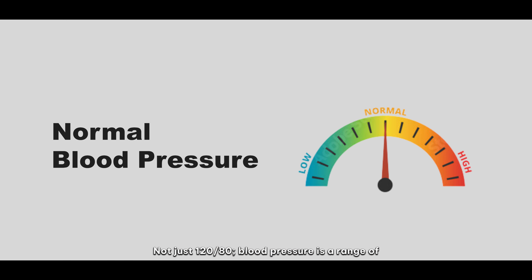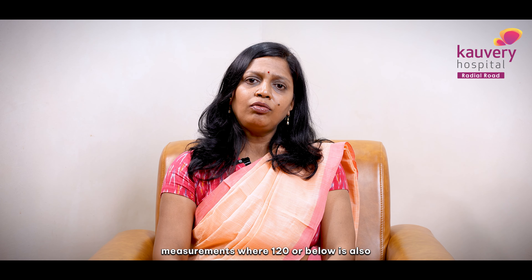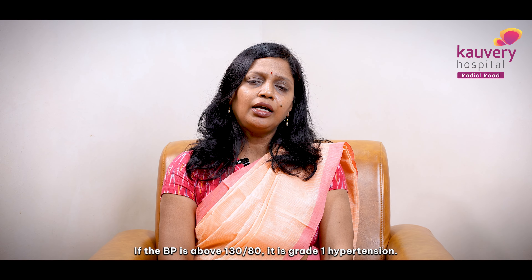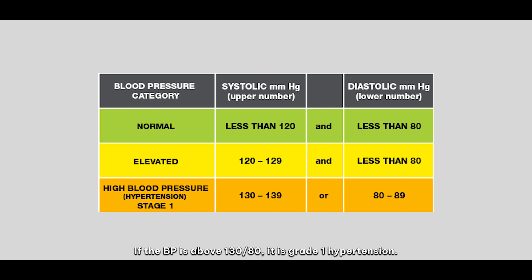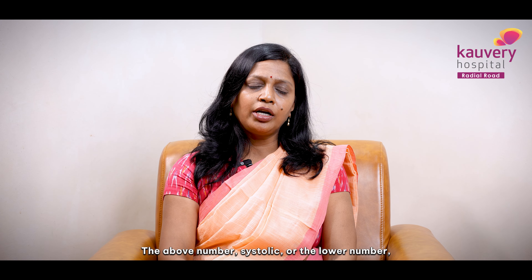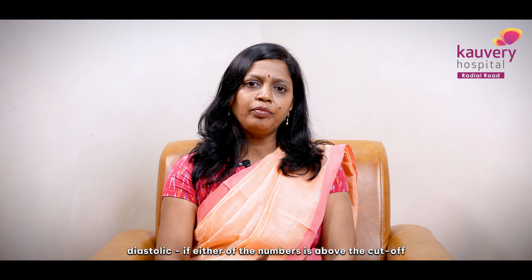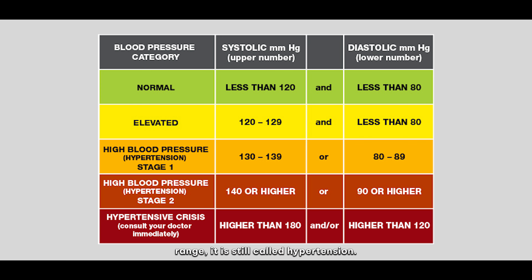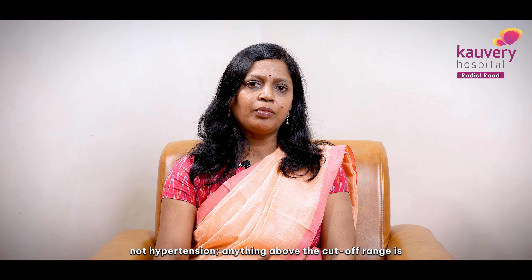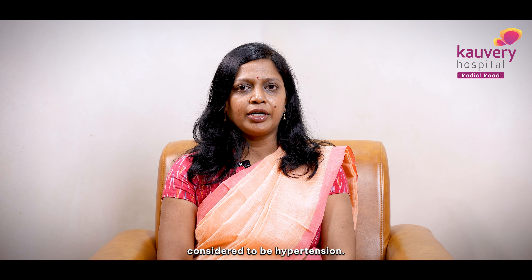It's not just that 120 by 80 is normal — blood pressure is a continuum, a range of measurements. Any value which is 120 or below is normal blood pressure. If you are 120 by 80, that is normal; if you are above that, it is elevated blood pressure. If you are 130 by 80, it is called Grade 1 hypertension. Above 140 by 90, we call it Grade 2 hypertension. The upper number is systolic and the lower number is diastolic. So if you have any value at this cut-off, it is still called hypertension. Thank you.